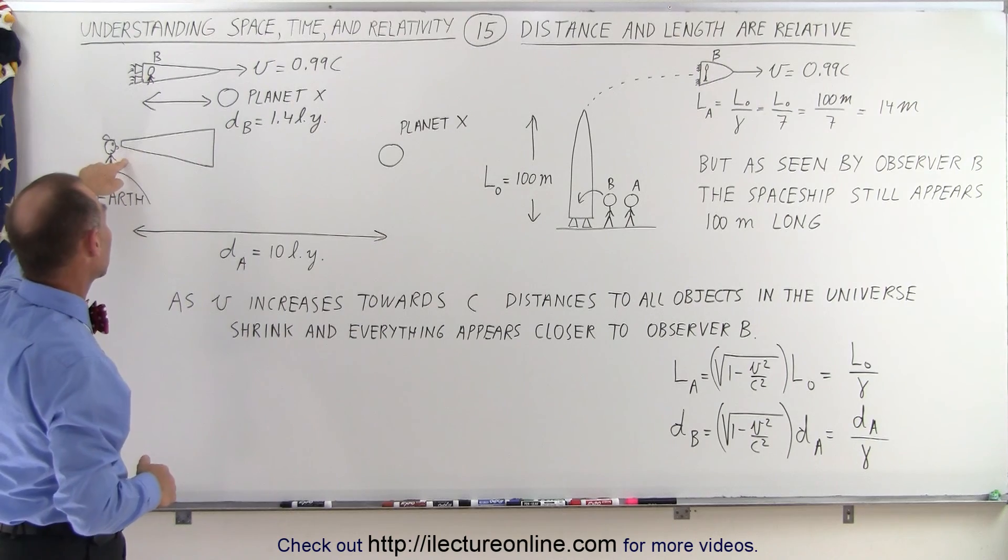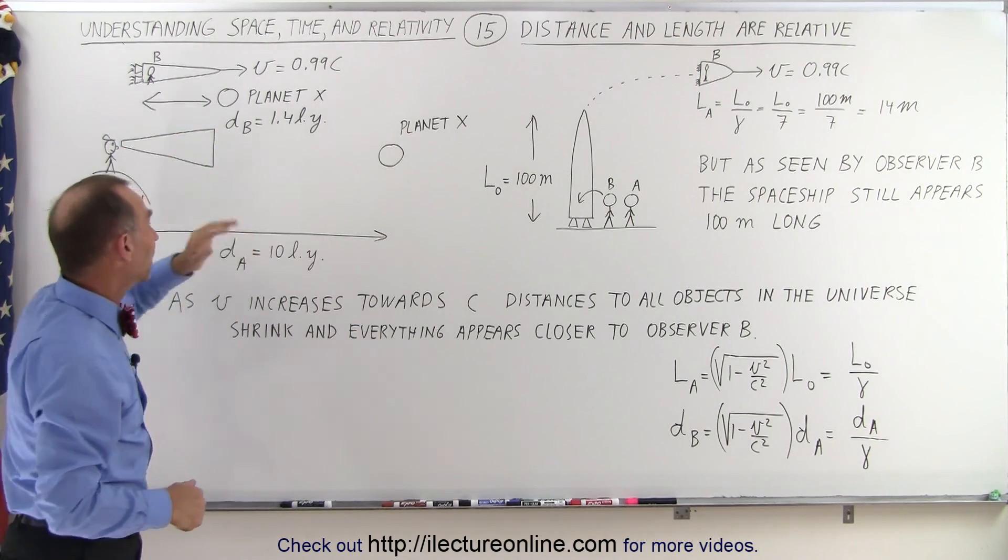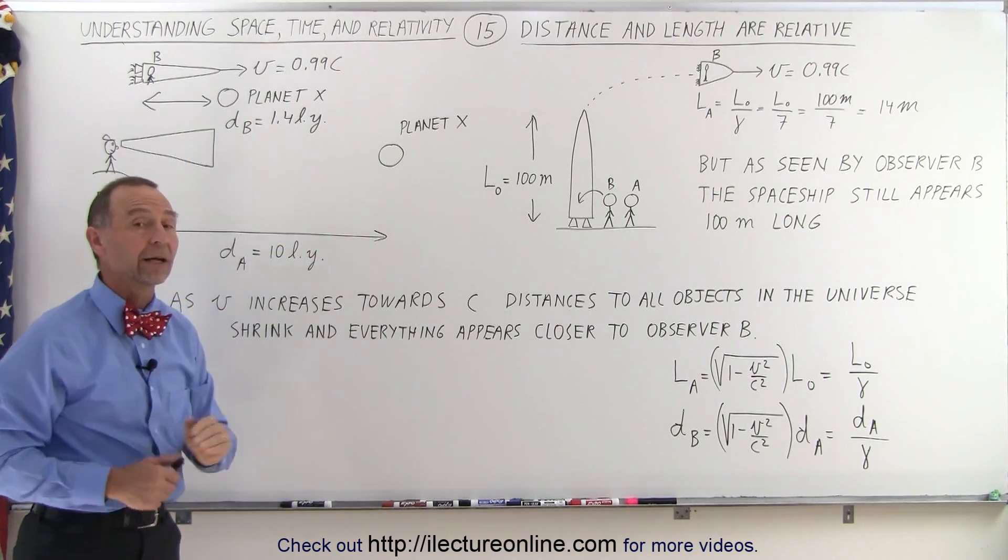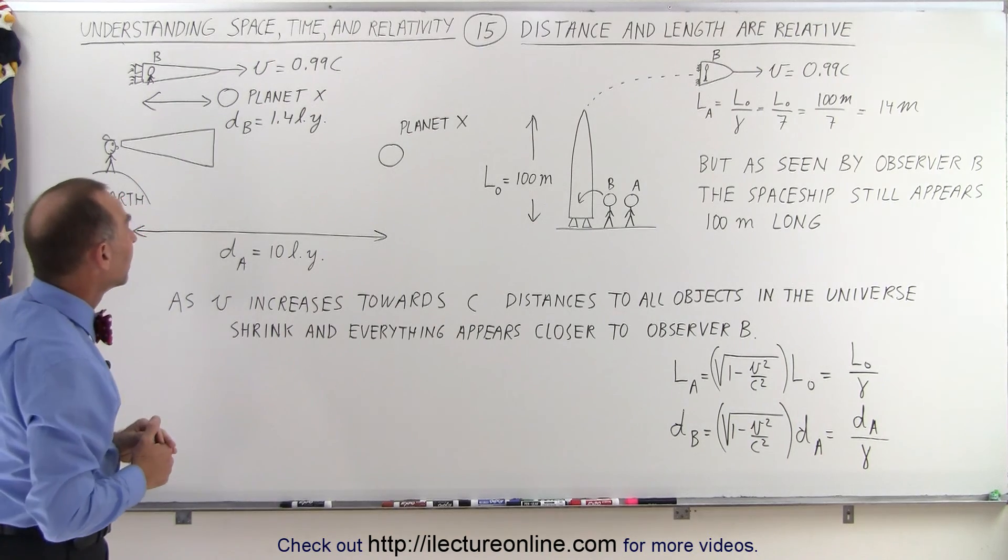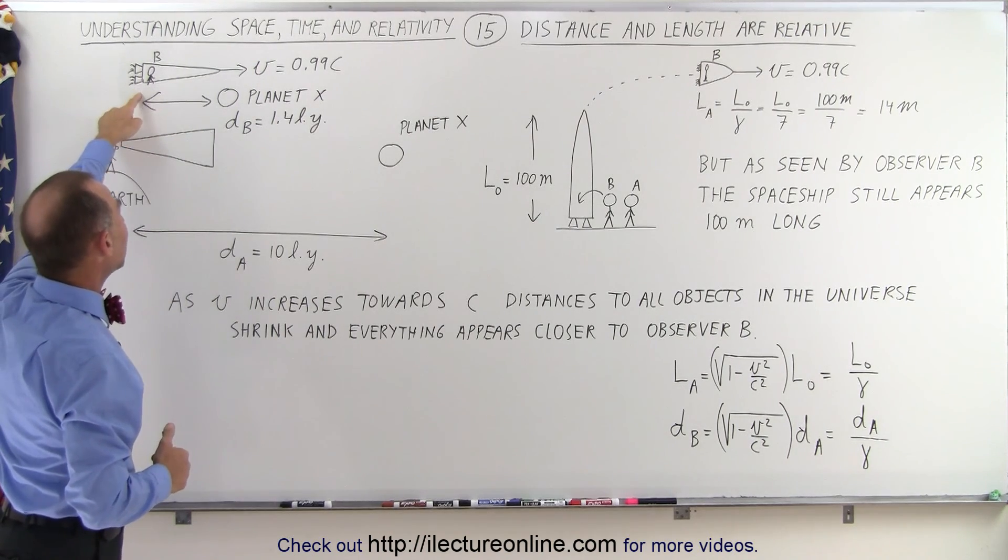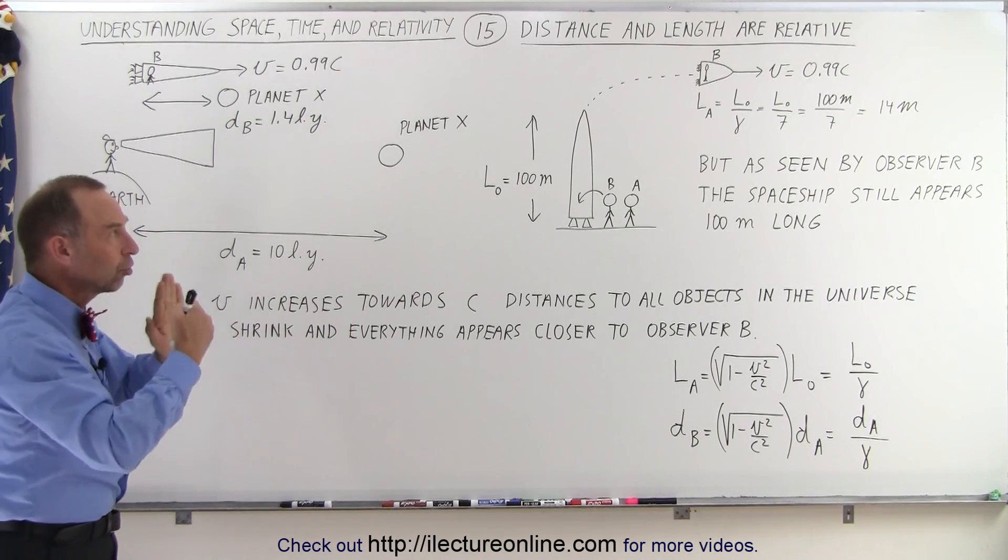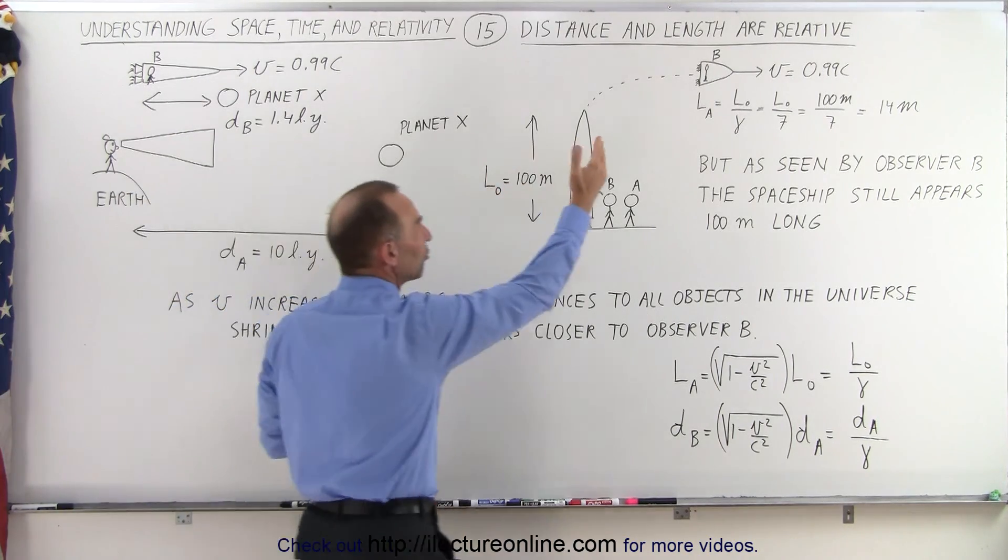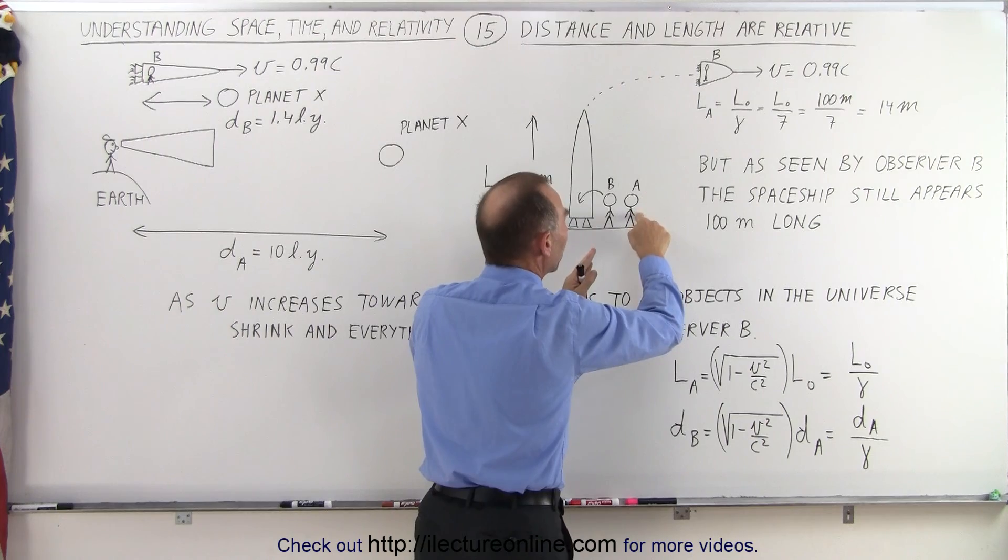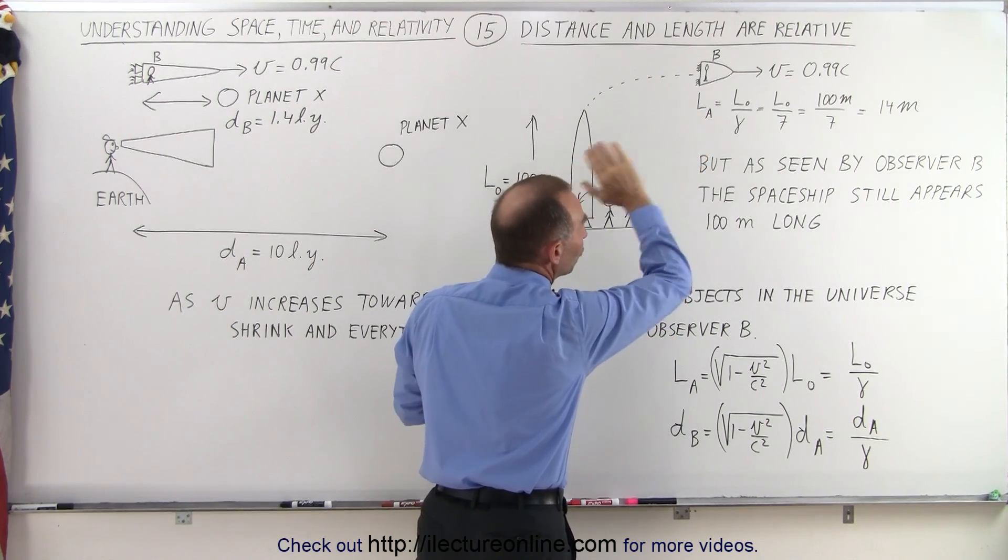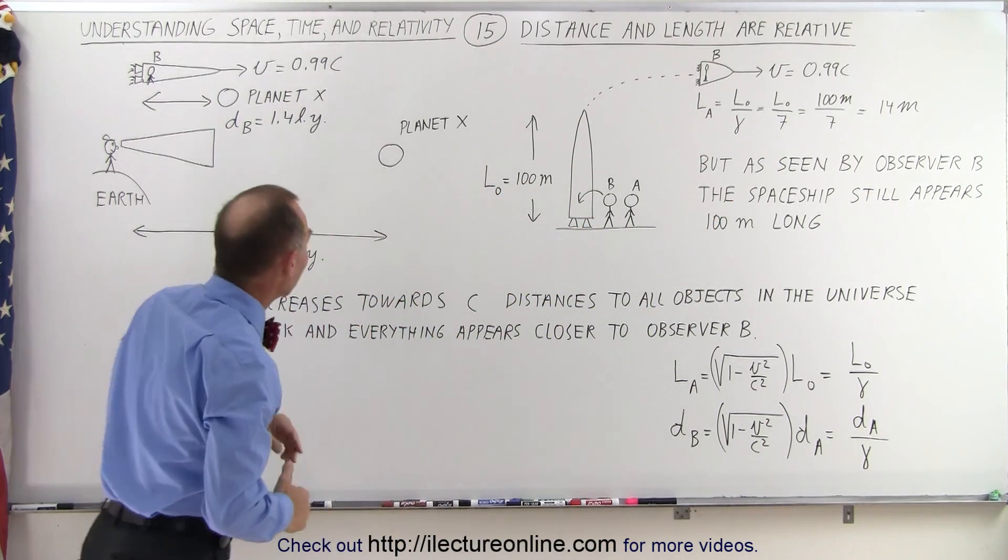According to the Observer on the Earth, looking at the planet, the planet does indeed look 10 light years away. But what happens to Observer B in the spaceship looking at the planet? The planet looks a lot closer, just like the length of the spaceship seems to shrink to Observer A, as Observer B is traveling at a very high speed.